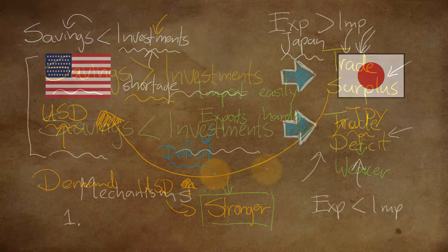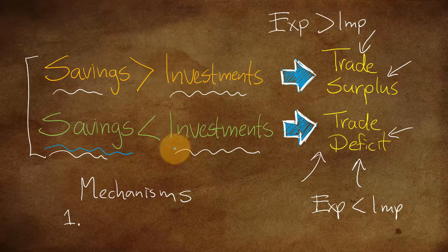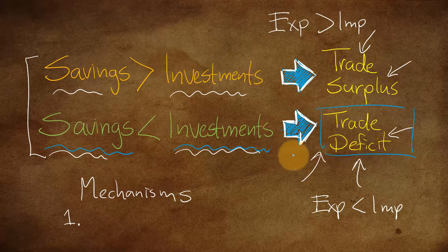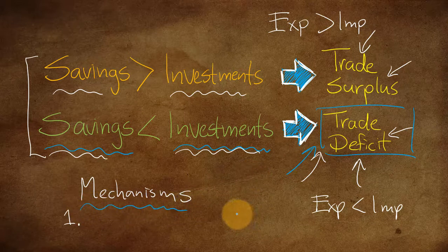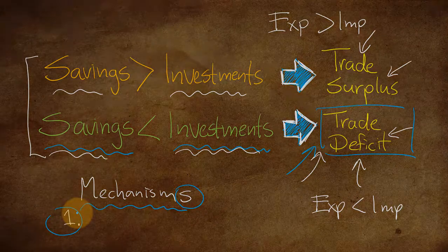This brings us back to where we started: when domestic savings cannot cover domestic investments, you end up with a trade deficit. You can look at all kinds of formulas, but the mechanism that underlies it looks like this. Remember, there are multiple mechanisms — I just explained one — but hopefully it clarifies why this relationship actually occurs.